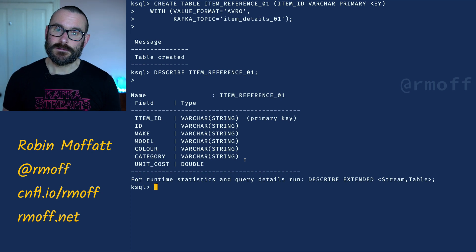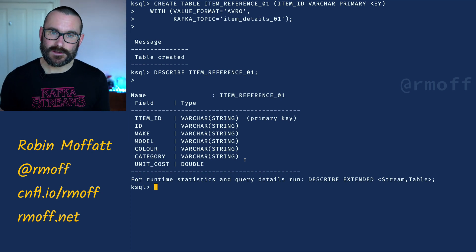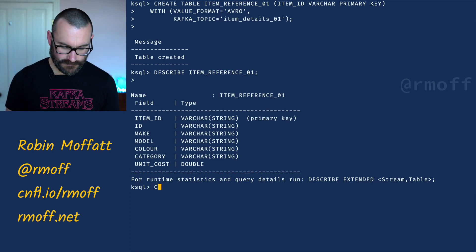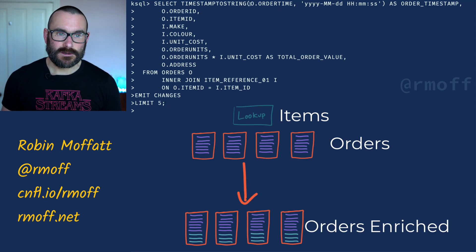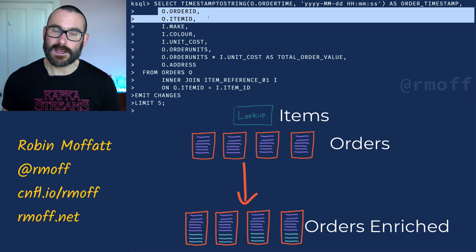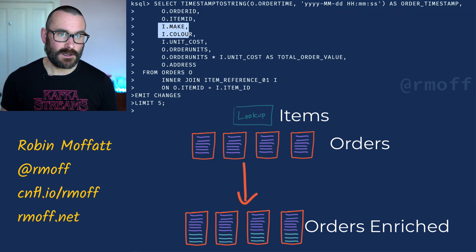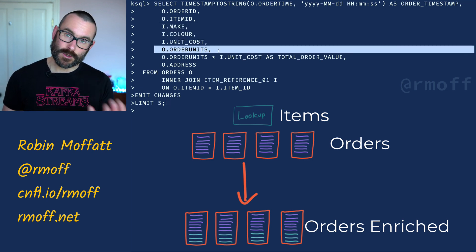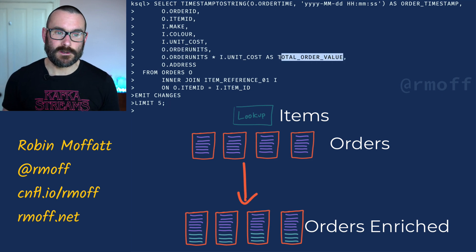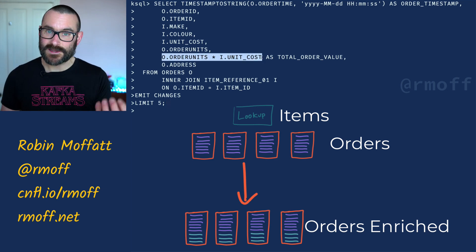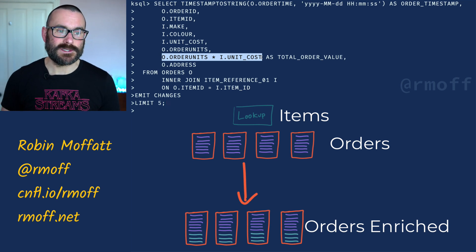So now we can use this data to join to our orders as they arrive in the system. We're going to do a select: the order time as a human-readable order timestamp, the order ID, the item ID, then pull in the item make, the color, the unit cost. Then we say well, if we know how many were ordered and we know how much they cost, we can work out the total order value — that's a calculation combining a value from the event with a value in the lookup table — and then we've got the address for the order.